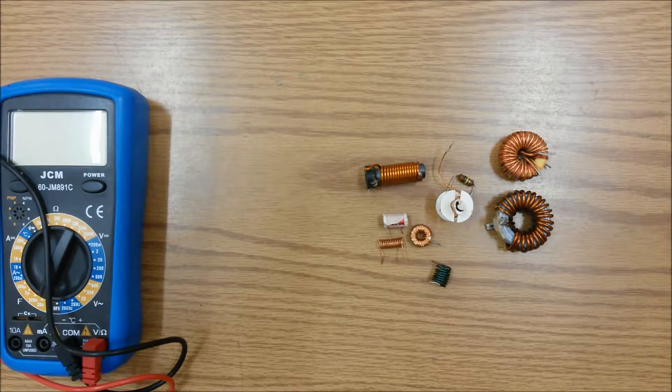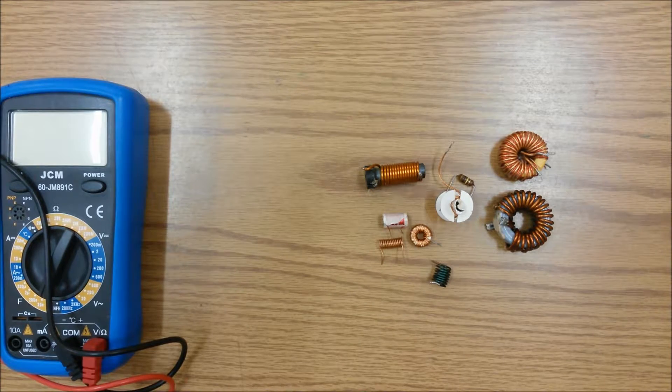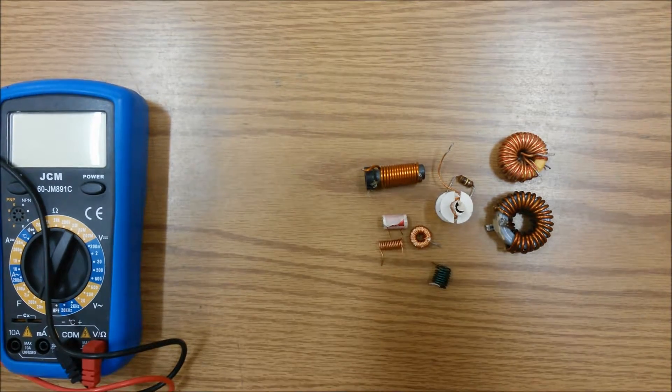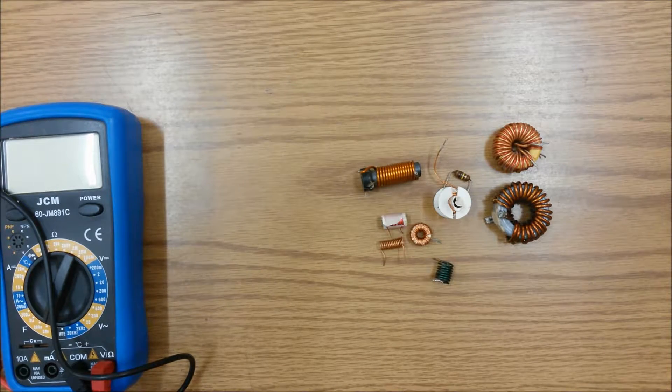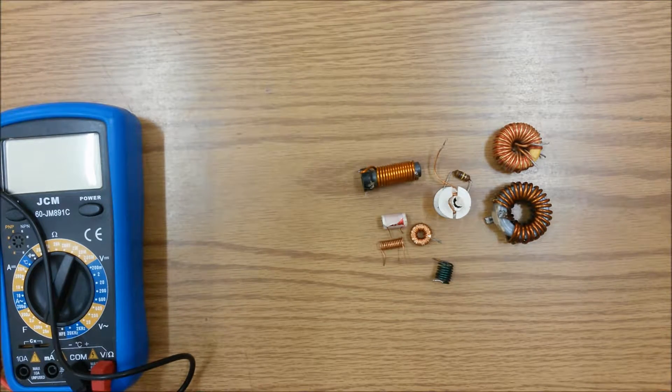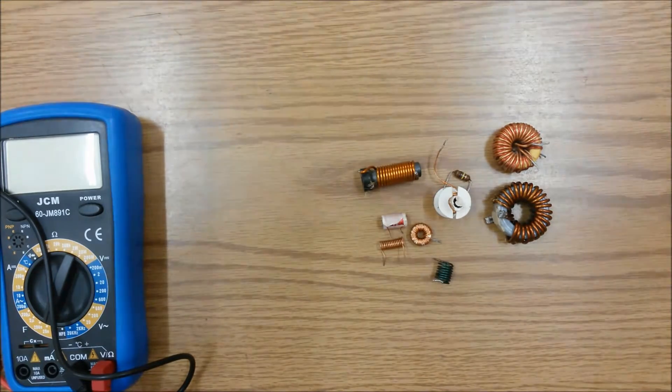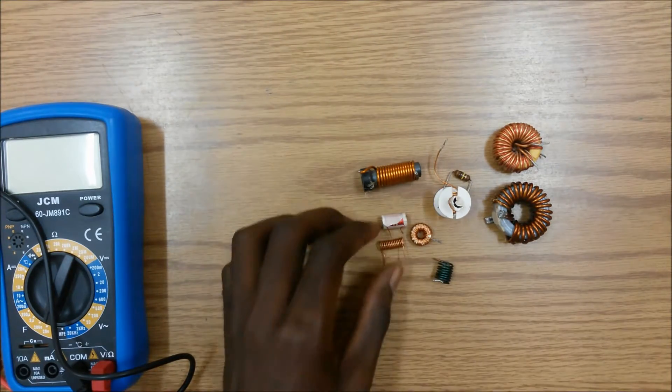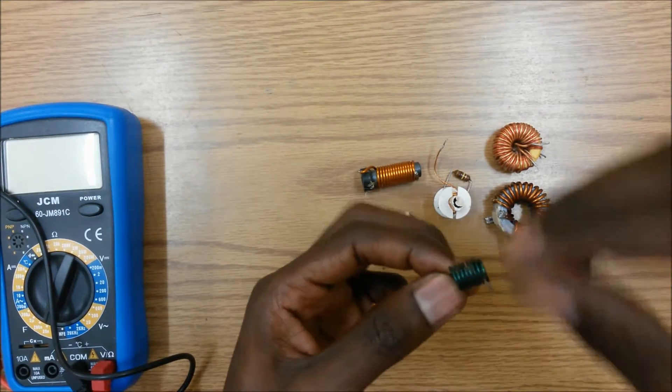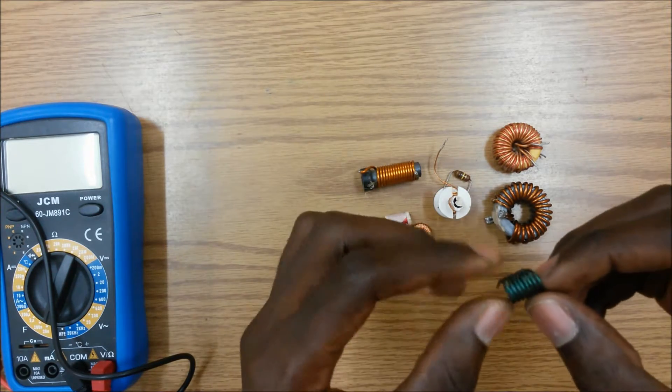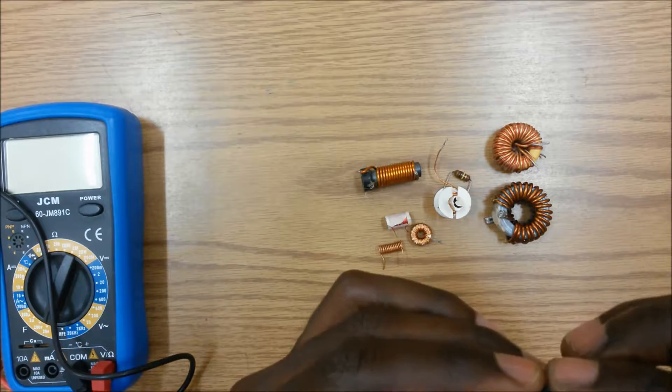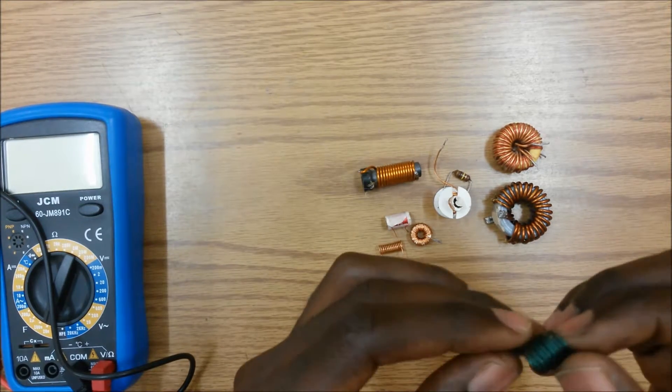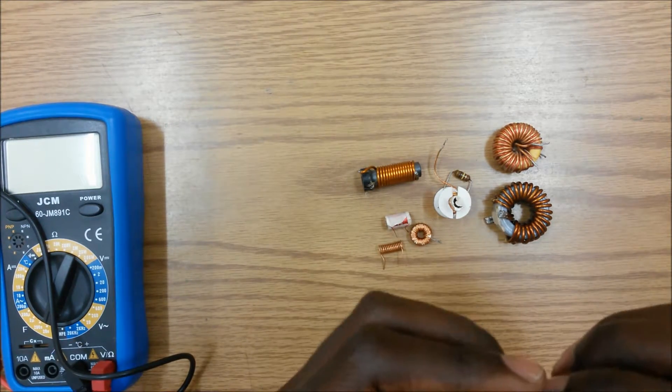The principle behind storing energy in a magnetic field stems from the concept which says that any current carrying conductor has associated with it a magnetic field. In the case of an inductor, when we wrap that conductor a number of times, we actually increase the strength of the magnetic field which is around the conductor.